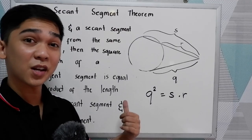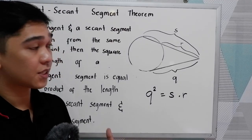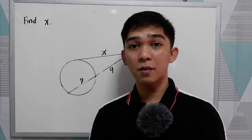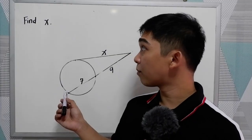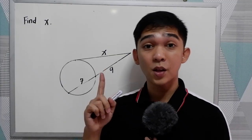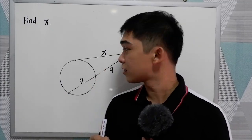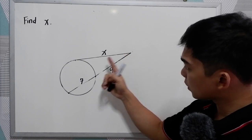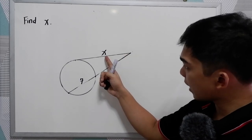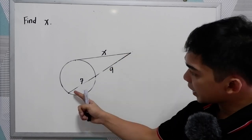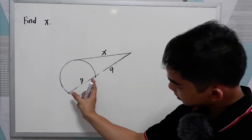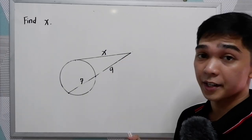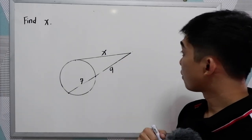Let us try to solve some exercises regarding this theorem. To apply our theorem, let's have example number one — we need to find X. We have a tangent segment which measures X, and the secant segment with total length 7, and the external part is 9.